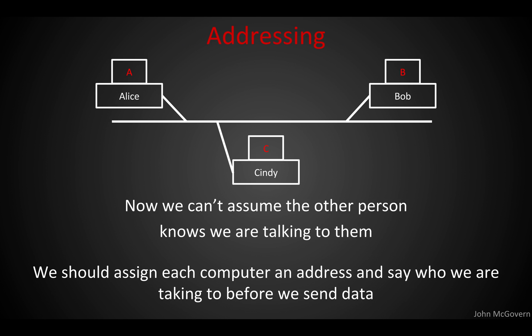What complexity is added when we have more than two devices? Well, we've got to know who we're talking to — we can't assume the other person will know the transmissions are for them. So the obvious idea is to assign each computer an address: Alice will be A, Bob will be B, Cindy will be C. Whenever we send data, we use their address to communicate.